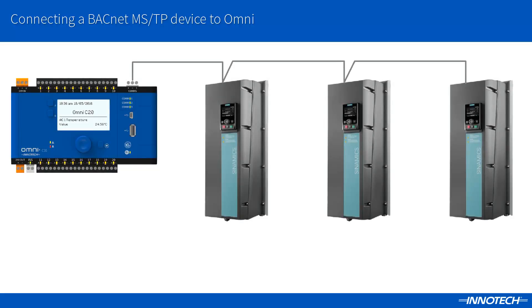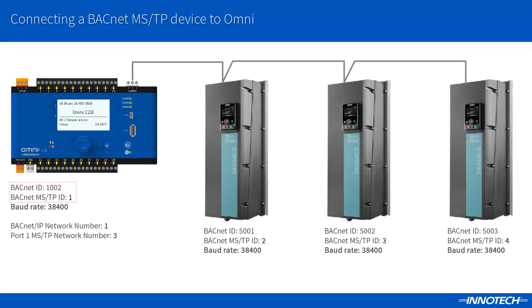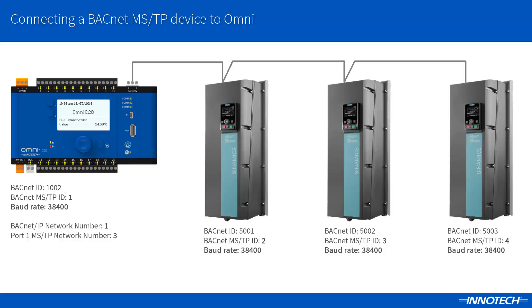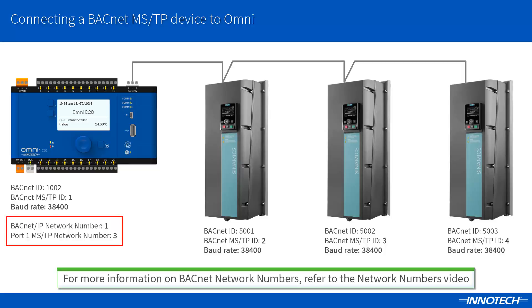In addition to the Omni controller, each MSTP device needs to have a unique BACnet MSTP instance. This is in addition to the BACnet instance as shown. In this example, all devices are configured correctly including baud rates and BACnet MSTP addressing. The configured Omni comm port needs to be set to a unique network number for the BACnet network. For more information on network numbers, refer to the relevant video available on the Initec website.